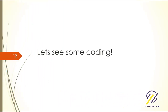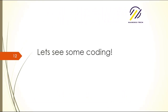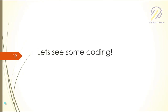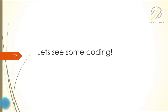Before we start coding, you should know a few things about classes. Anything you write inside a class is known as a member of that class. By default, all members in a class are private. If you don't define any access modifier, the class assumes the member is private, which is the most restricted access modifier.